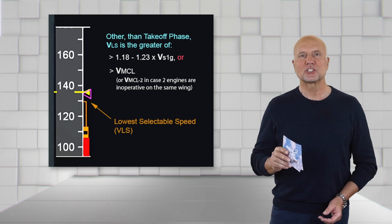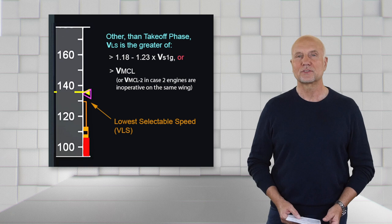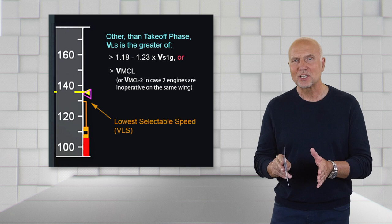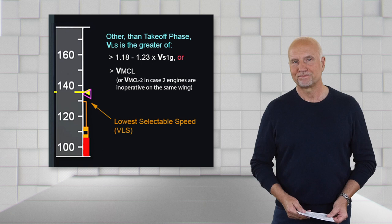For all other flight phases, it is the greater of a value between 1.18 and 1.23 of VS1G or VMCL. The VLS provides a safety margin against stall at low speeds. It is displayed for the first time three seconds after takeoff and only exists in flight. The VLS shown on the PFD is computed by the prims, but it is also independently computed by the FMS and this computation is displayed on the approach panel of the FMS performance page.